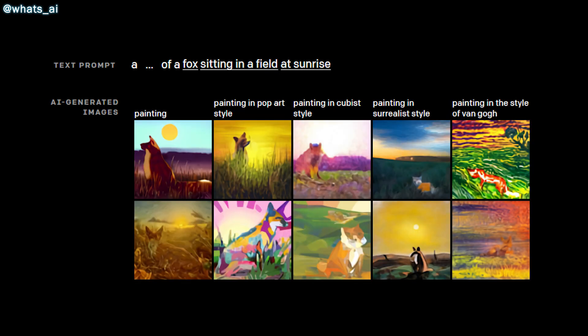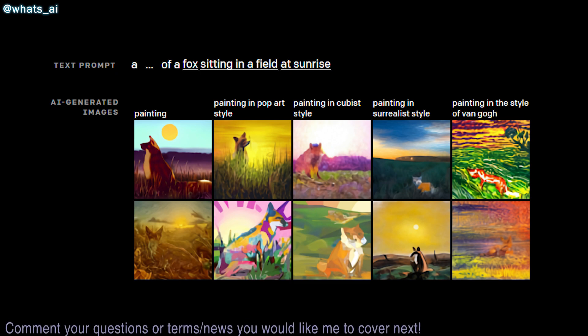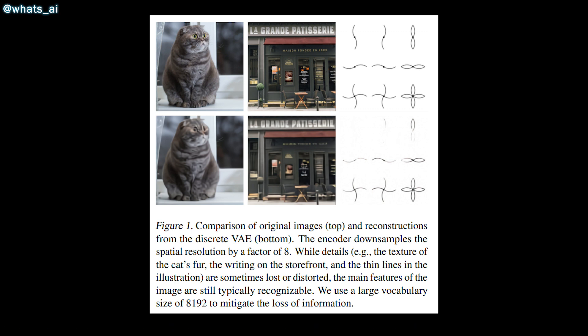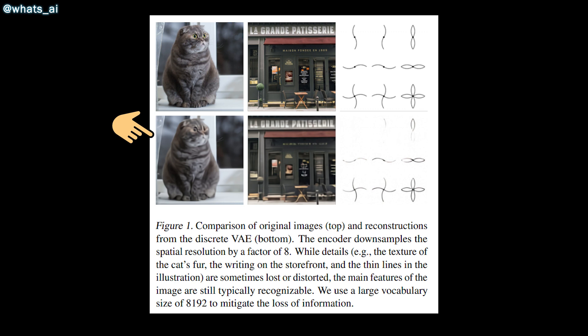Using the pixels of the image directly would require way too much memory for high-resolution images. Instead, they use a discrete variational autoencoder, called DVAE, that takes the input image and transforms it into a 32x32 grid, giving as a result 1024 image tokens rather than millions of tokens for a high-resolution image. The only task of this DVAE network is to reduce the memory footprint of the transformer by generating a new compressed version of the image.